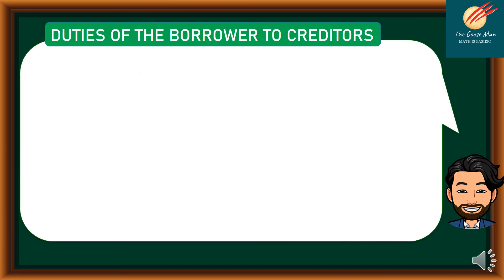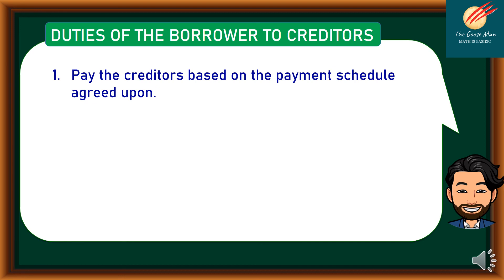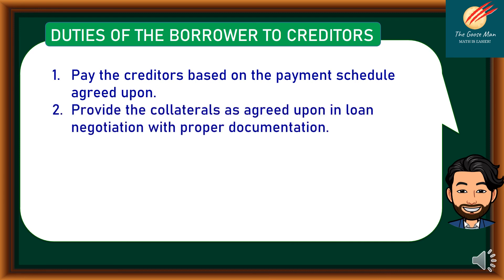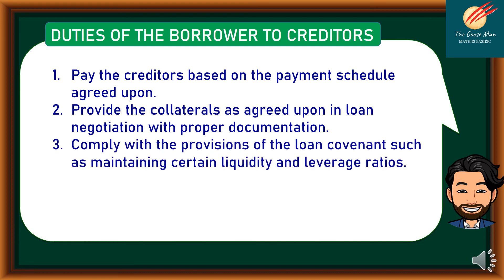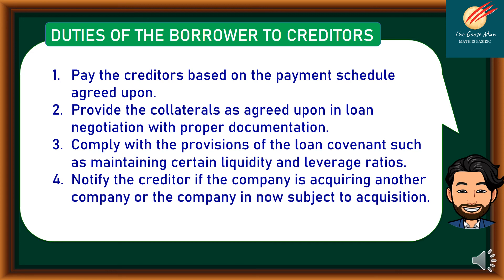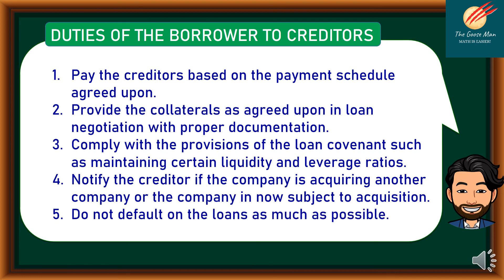In case your loans are granted, here are your duties as a borrower to creditors. Number one, pay creditors based on the payment schedule agreed upon. Number two, provide collaterals as agreed upon with proper documentation. Number three, comply with provisions of the loan covenant, such as maintaining certain liquidity and leverage ratios. Number four, notify the creditor if the company is acquiring or is subject to acquisition. Number five, do not default on the loans as much as possible.